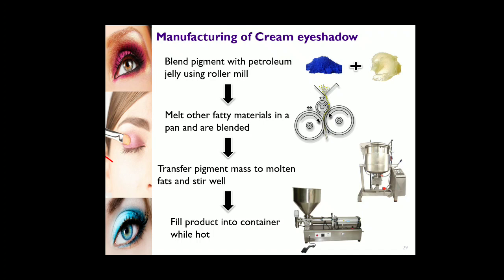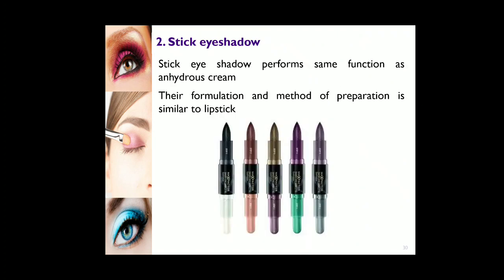To manufacture eye shadows, first blend the pigments with petroleum jelly using a roller mill. Then melt the other fatty materials in a pan and blend them with the petroleum jelly–pigment mixture. Transfer the pigment mass to the molten fats and stir well until a homogeneous mixture is formed. Fill the product into containers while hot, then allow to cool. Your eye shadow is then ready for labeling and dispatch.